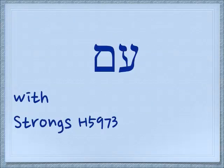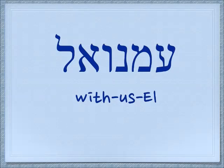Now I want to cover a word which is easily confused — because Ayin, as you remember, is also a silent letter, and the word Im with an Ayin means with. Im with an Ayin is with. You might know this word: Immanuel. Im is the with, the Anu part is us, and El is God. So we say his name was Emmanuel — God with us.